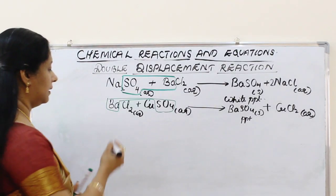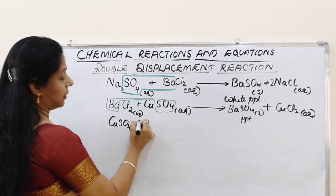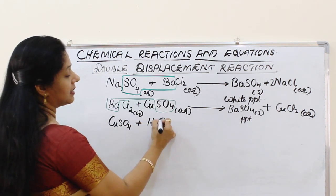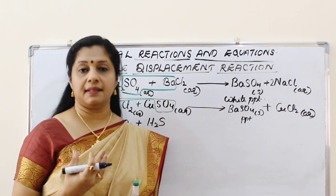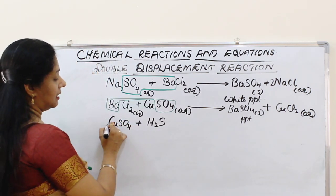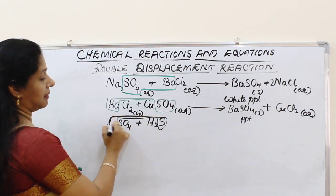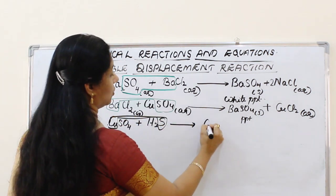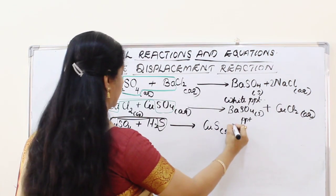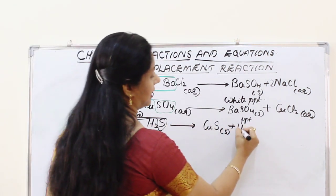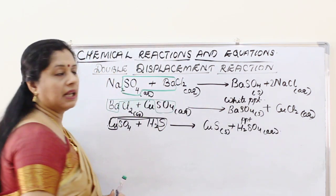Another example: copper sulphate (aqueous) reacts with hydrogen sulphide gas — a gas with a very unpleasant pungent smell. Copper and sulphide combine to form copper sulphide as a solid precipitate. Sulphuric acid (H2SO4, aqueous) is the other product left out.